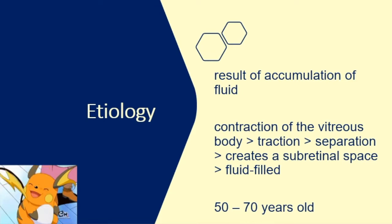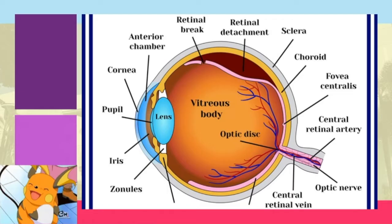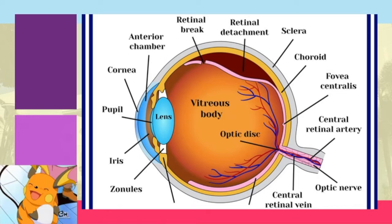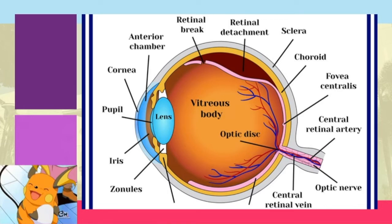Retinal detachment is common among patients who are age 50 to 70. There are different types of retinal detachment, but first, let's look at the diagram. There are two primary layers of the retina: one is your RPE, and then the other one is your sensory retina.